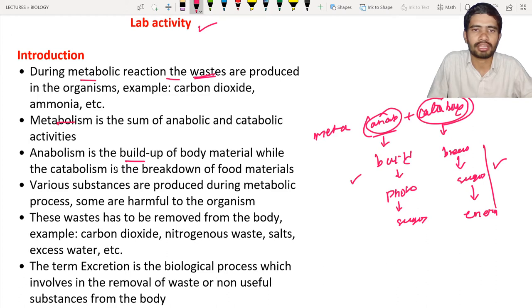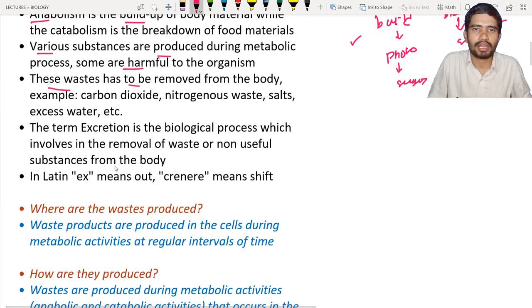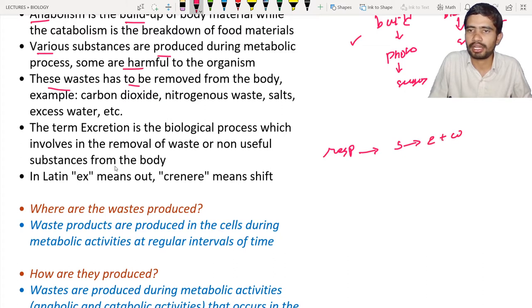During metabolic processes, various substances are produced — some are harmful, some are non-harmful, and some are toxic. These waste materials have to be removed. For example, during respiration, sugars are broken down leading to the production of energy plus carbon dioxide. The carbon dioxide is a waste product and has to be removed from the body.